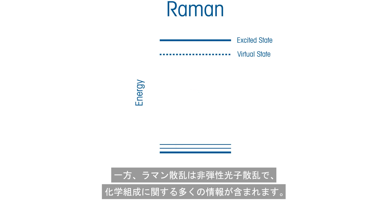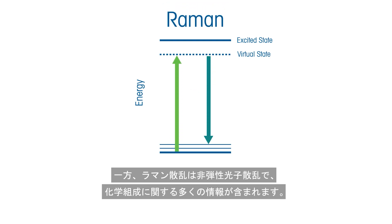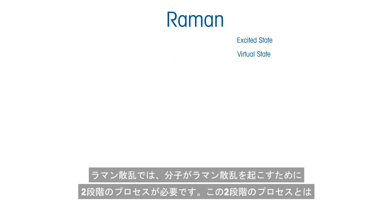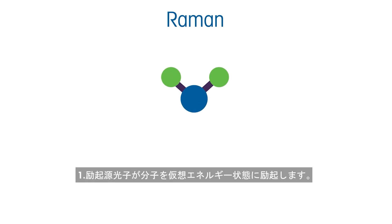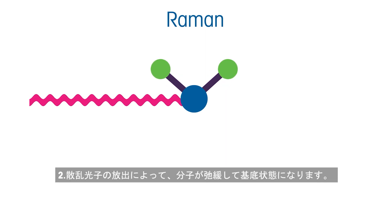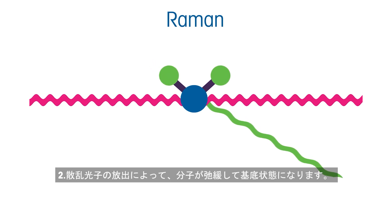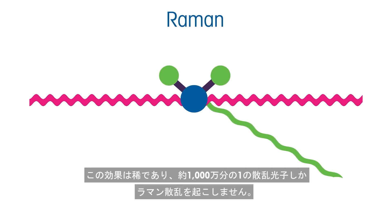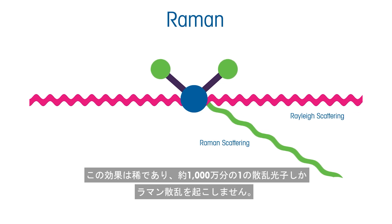Raman scattering, however, is inelastic photon scattering and is highly informational to the chemical makeup. Raman scattering requires two steps to occur for a molecule to Raman scatter: 1. The excitation source photons excite the molecule into a virtual energy state, and 2. The molecule relaxes through a release of scattered photons to a ground state. This effect is rare, with only about 1 in 10 million scattered photons being Raman scattered.